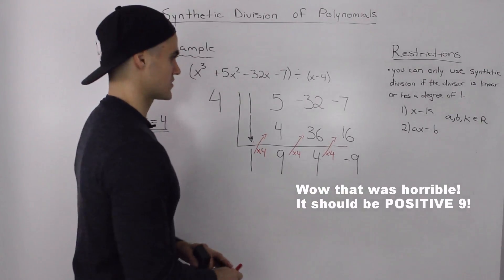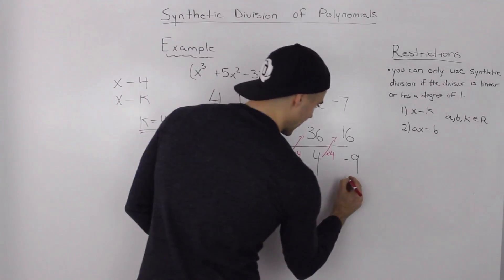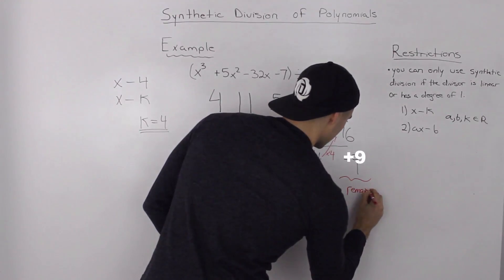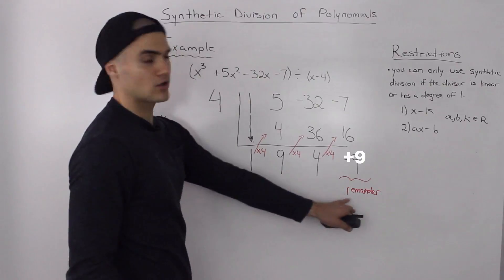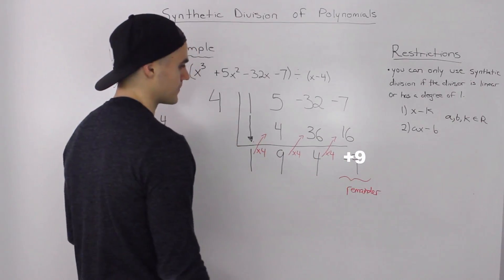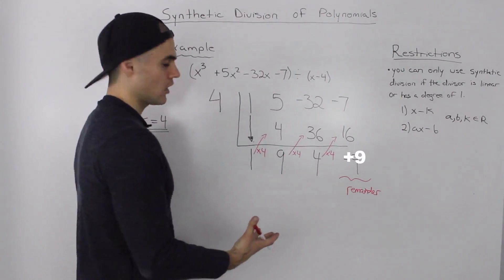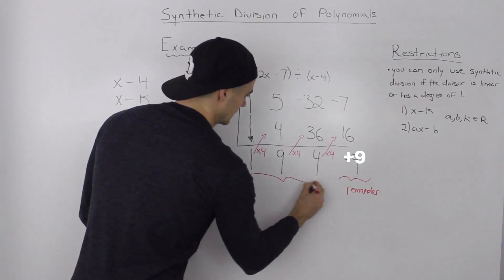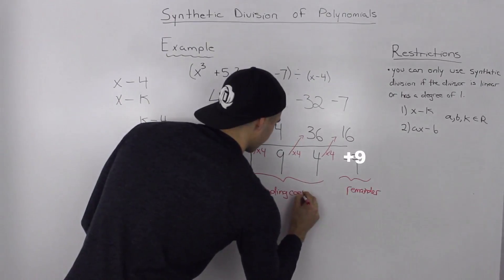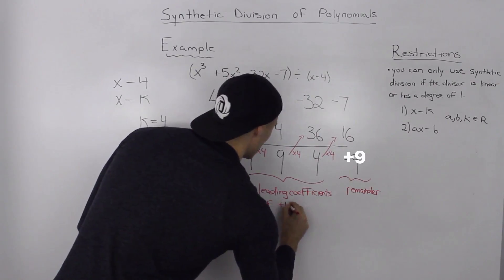Now, what do these numbers represent? The last number always represents the remainder. In synthetic division, the remainder will always be a constant, because our divisor has to be linear — so the remainder would be a degree less than that. The remainder is negative 9. Any numbers remaining other than the remainder represent the leading coefficients of the quotient.